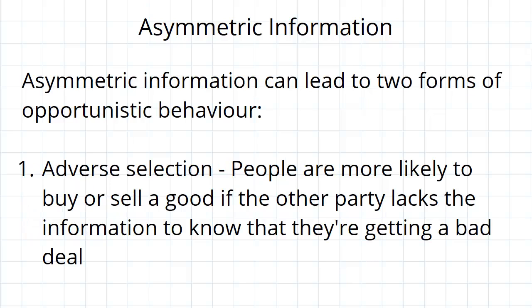There are two forms of what we can call opportunistic behavior, where you see an opportunity to unfairly profit from the other party's lack of information. The first of these is adverse selection — where people are more likely to enter the market to sell a good if the other party lacks the information to know they're getting a bad deal. You basically see an opportunity to make an excessively high surplus by entering into a transaction where the other person is getting ripped off and simply doesn't realize it because they don't have the same information that you do.